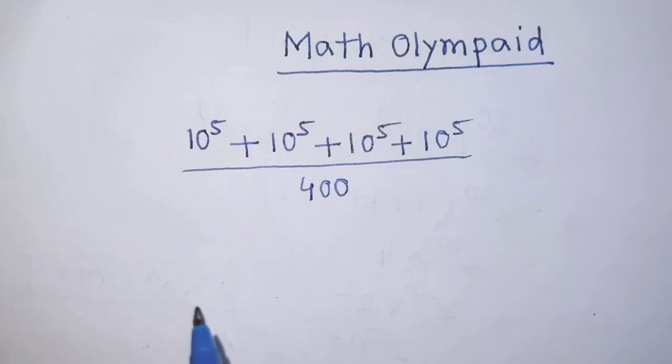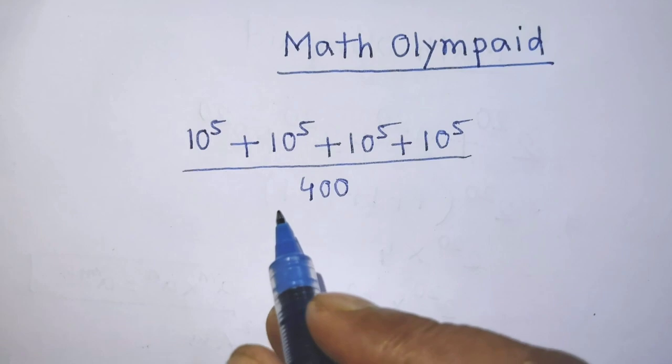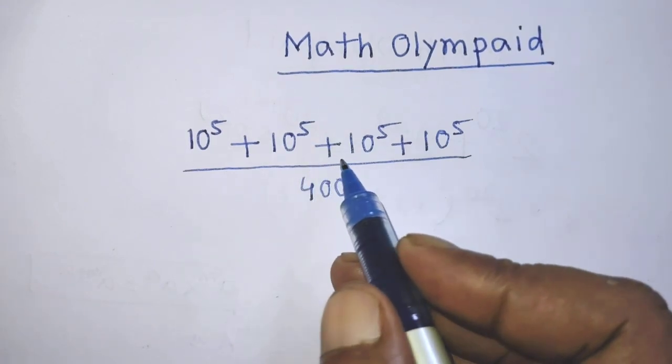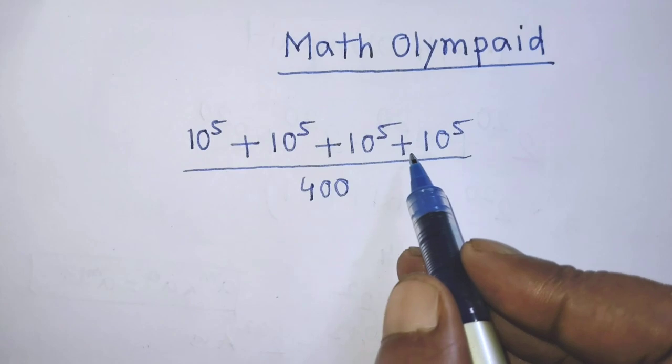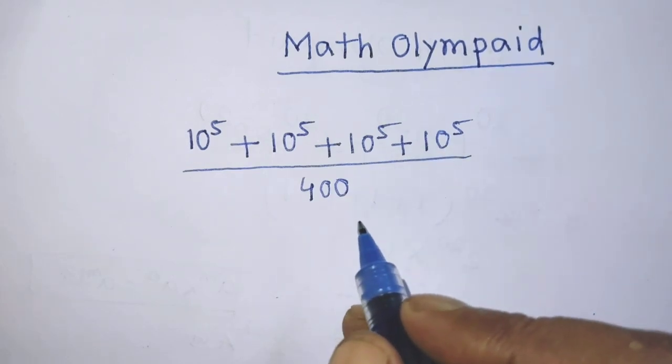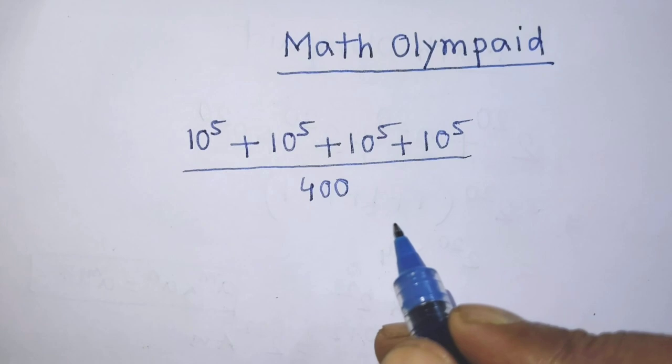Hello guys, you are welcome to solve this math problem which is 10 to the power 5 plus 10 to the power 5 plus 10 to the power 5 plus 10 to the power 5 over 400. Today I am telling you how to simplify this algebraic expression.